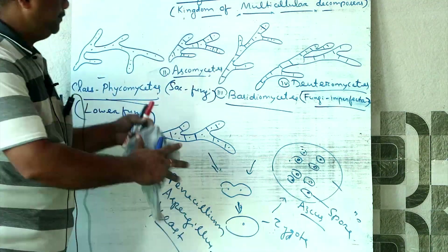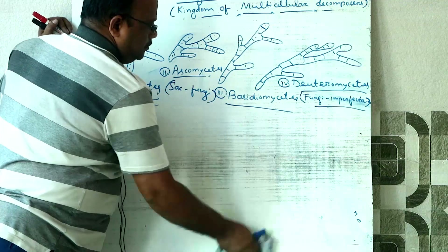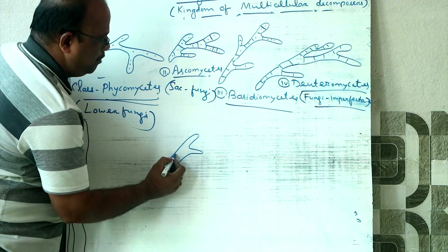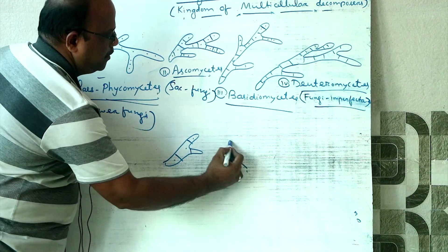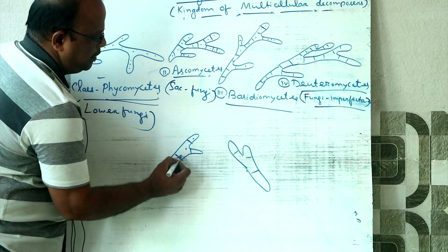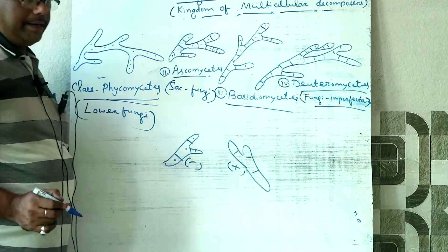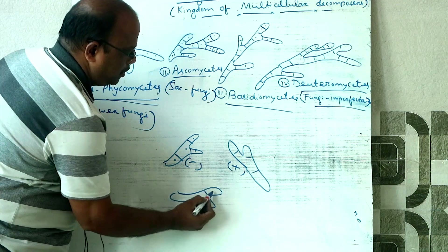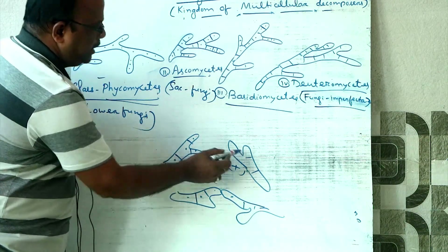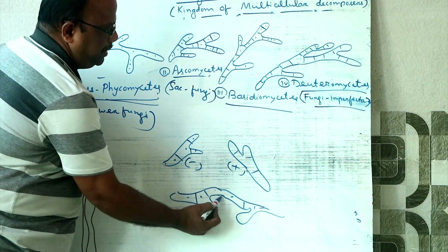Then comes Basidiomycetes. The mycelium is initially monocaryotic — it has a positive male type and female type. When the monocaryotic mycelia of opposite mating types come into contact, plasmogamy occurs, forming a dikaryotic cell.